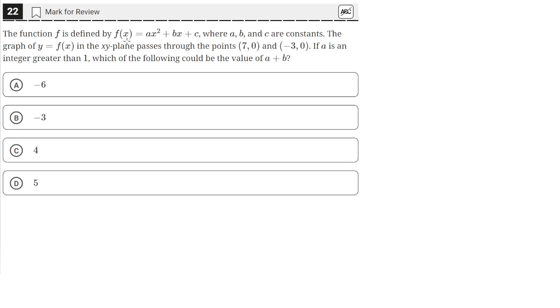The function f is defined by f(x) = ax² + bx + c, where a, b, and c are constants. The graph of y = f(x) in the xy-plane passes through the points (7, 0) and (-3, 0). If a is an integer greater than 1, which of the following could be the value of a + b?